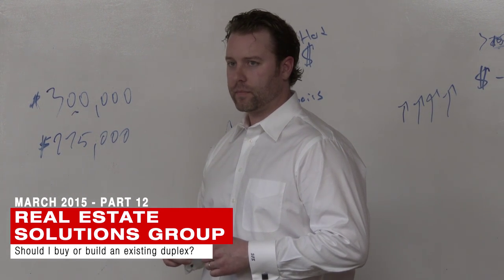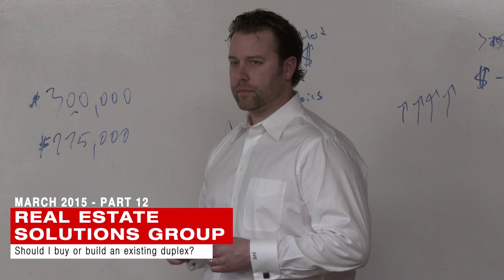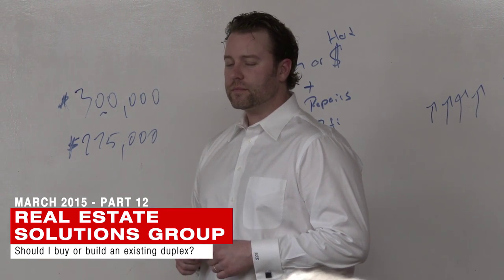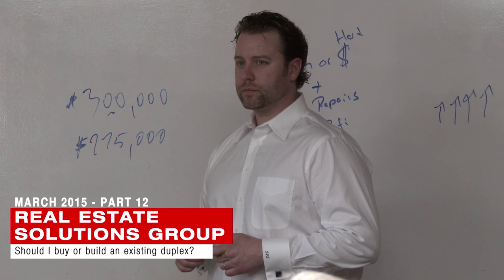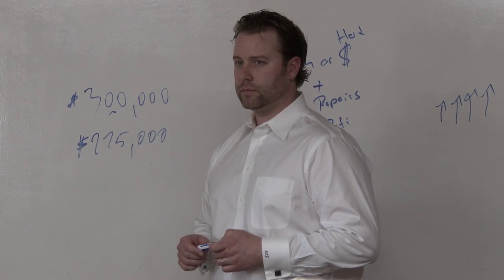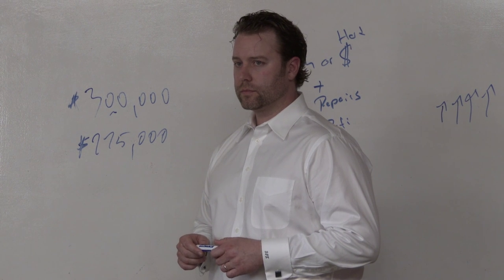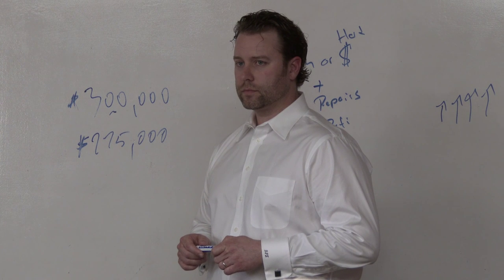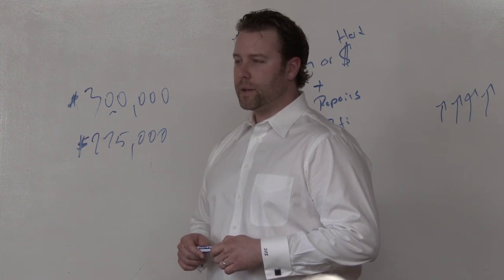I just had the same conversation with some first-time homebuyers. They were looking at a house that was built in 97 versus one that's brand new. If you take a look at it over time, income property is all about the income you're going to get minus expenses. That's your cash flow.